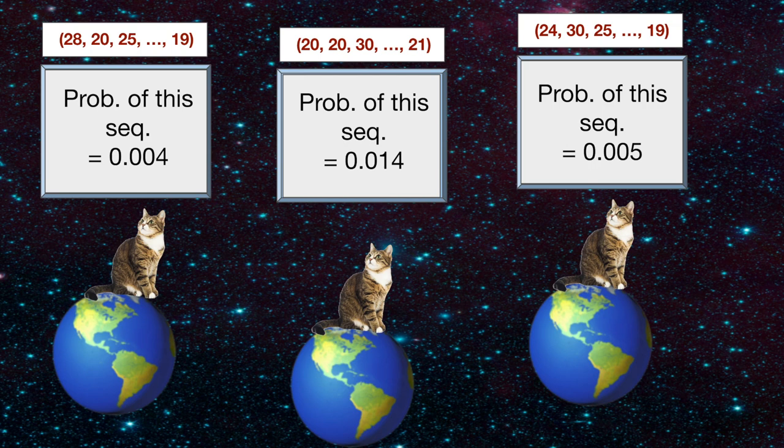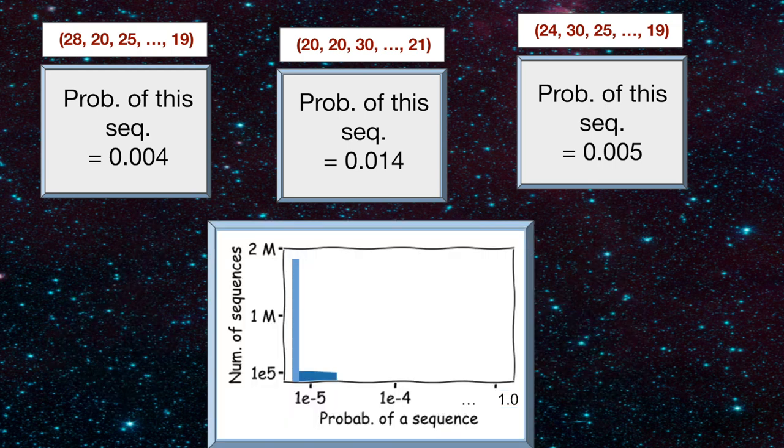The probability of a particular sequence occurring is simply the product of the probabilities for individual days. Ashley computes the probability of every sequence and creates a histogram. For each possible probability between 0 and 1, a bar indicates the number of sequences with that probability of occurring.